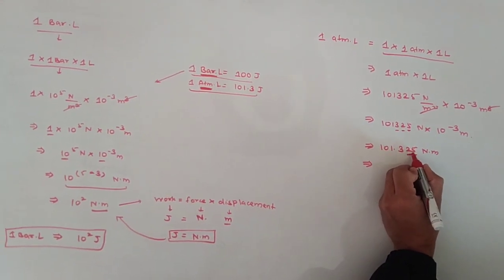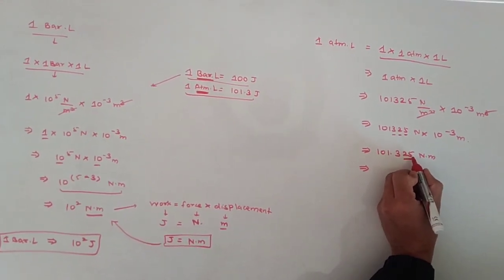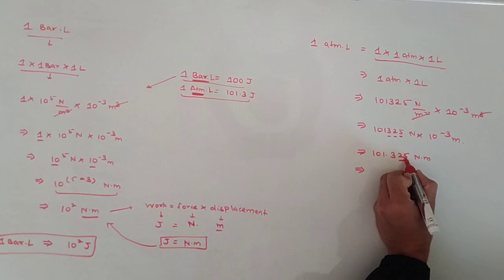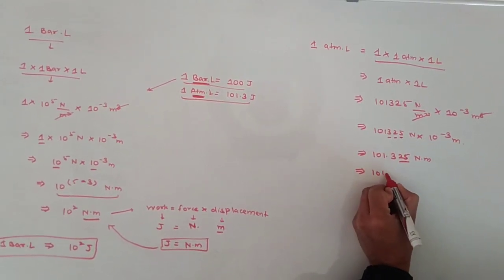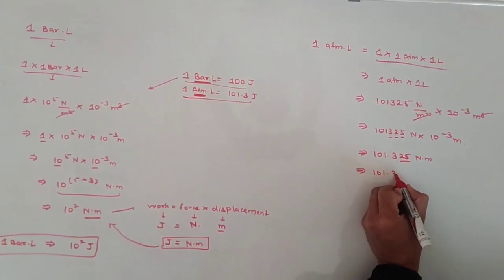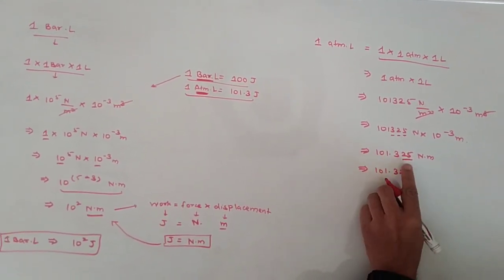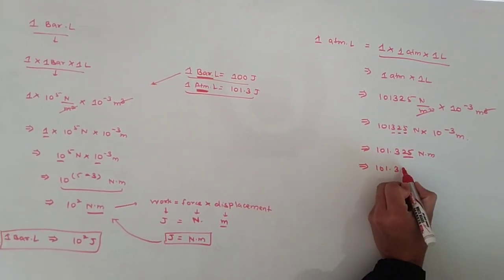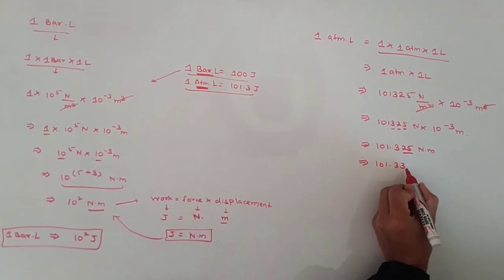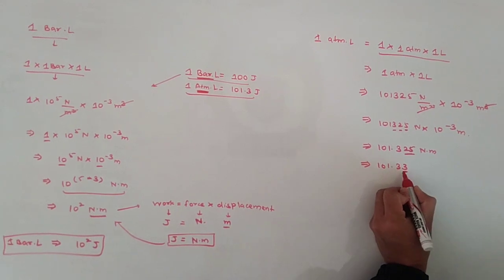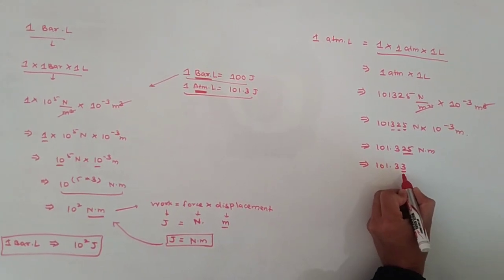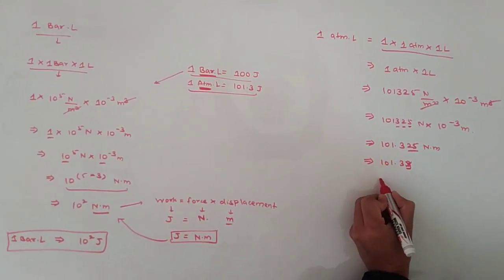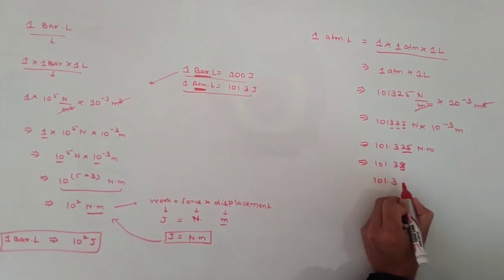The last two digits — 25 — are less than 5 in terms of rounding the third decimal, so the digit 5 rounds the value to 101.3. We are left with 101.3 Newton·meter.